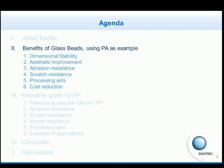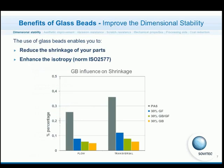The first part, the technical part, covers the benefits of glass beads using polyamide as an example. We can see that in automotive compounds, a lot of applications are containing 30% of glass fibers to obtain good mechanical properties.